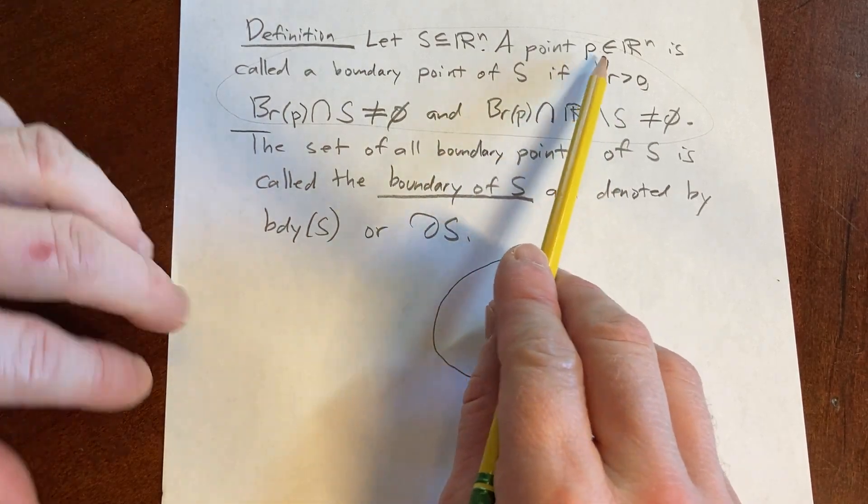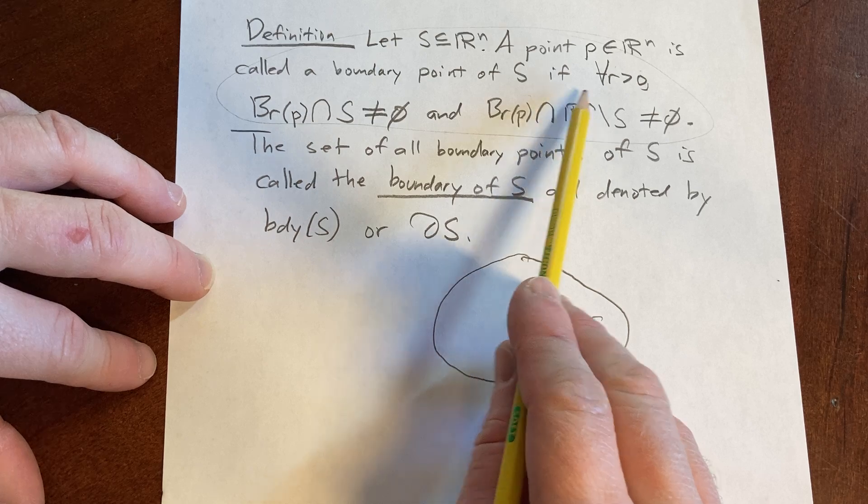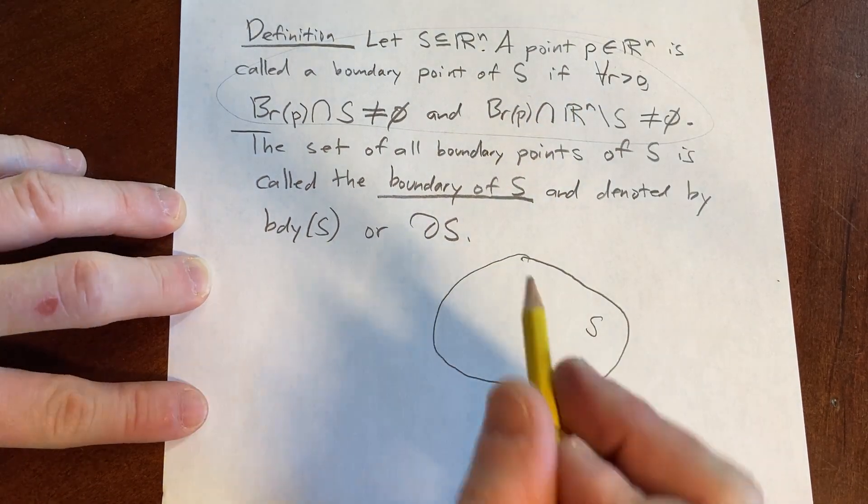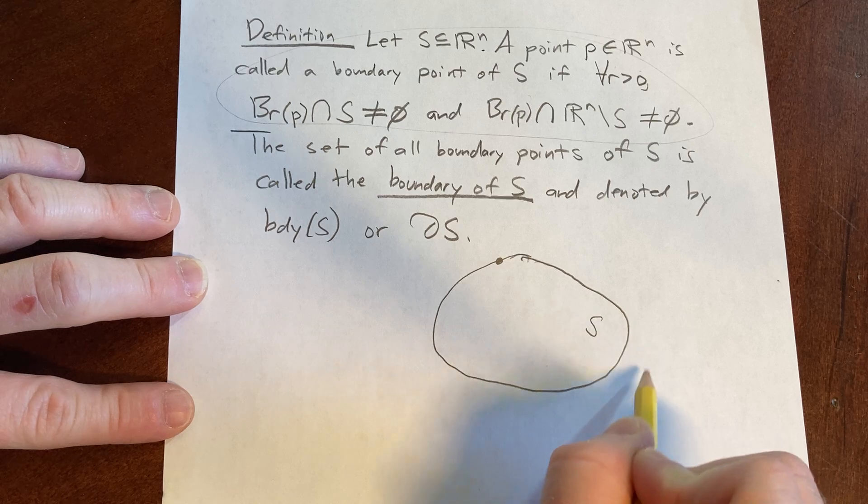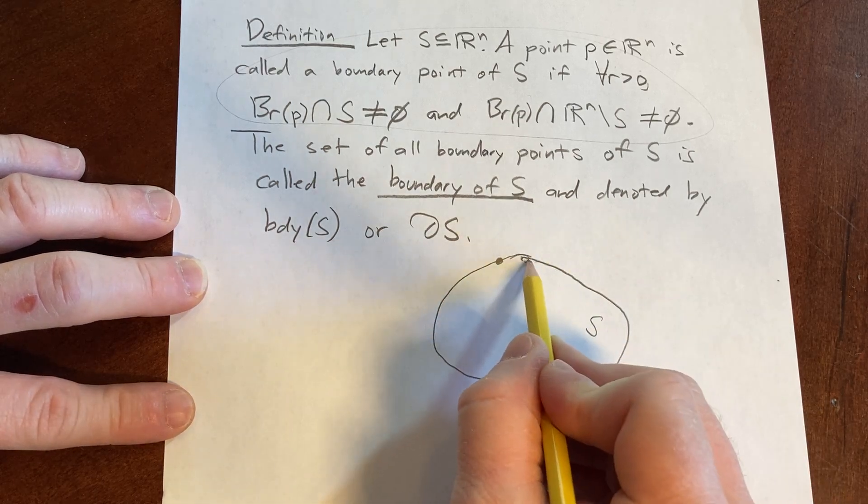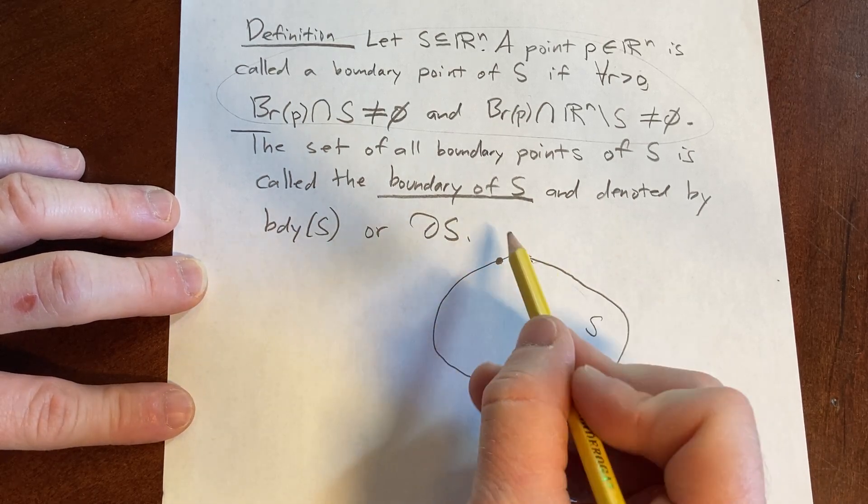So if you've got a point P in Rn, you're saying it's a boundary point of S if, well, what does it mean to be a boundary point? It means you're right here. That's the boundary. This whole piece here, that's the boundary. So this solid line here you see is the boundary, so this is a boundary point.